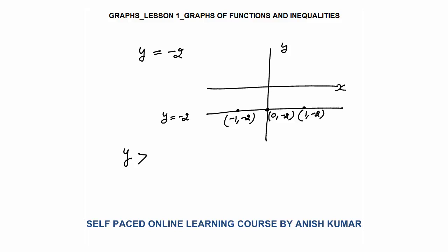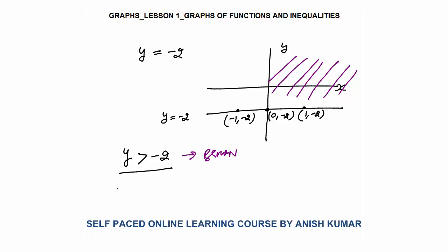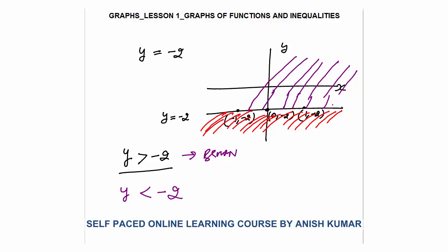If you want to draw y greater than minus 2, it means y should be more than minus 2. This complete region above the line, continuing to infinity, will be y greater than minus 2 — shown as the brown part. But if y is less than minus 2, it will be the area below this line. On each and every point in that red part, the value of y is definitely less than minus 2, because below the line the value of y further decreases, whatever be the value of x.